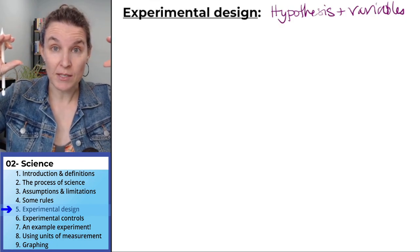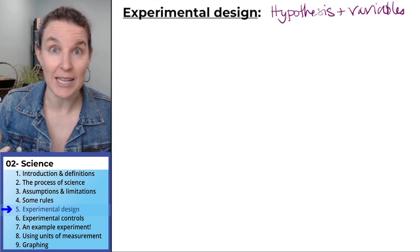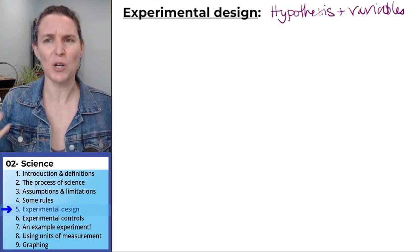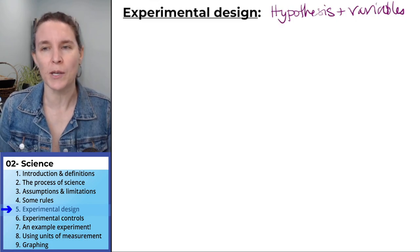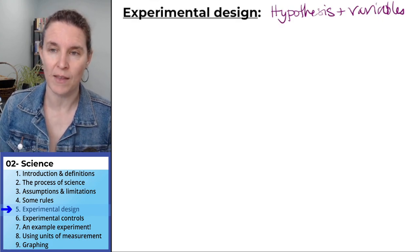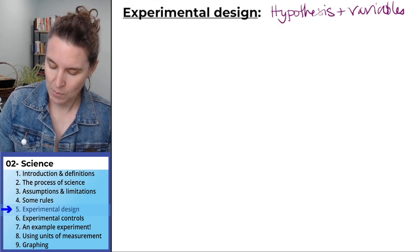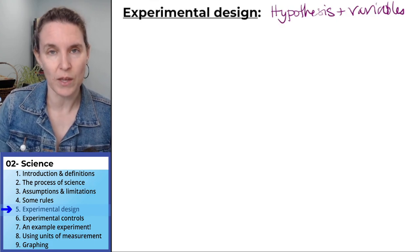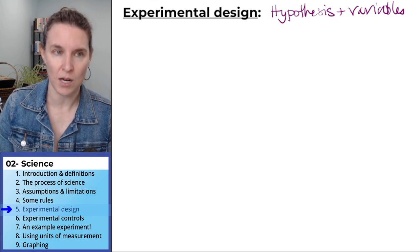We've identified a hypothesis, and part of the next thing to do is to set up an experiment. When we do an experiment, we need to identify the variables that we'll be dealing with in that experiment. I'm going to write them all down first so that you have them, and then we're going to talk about each one.